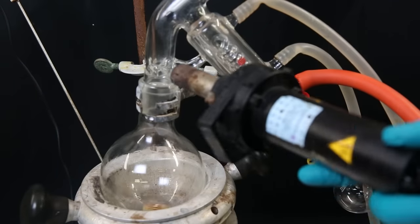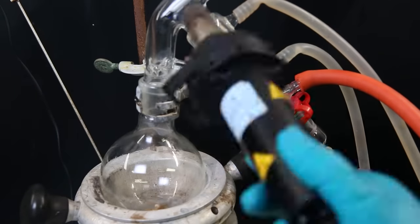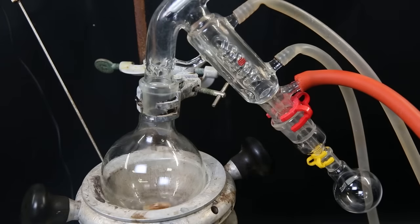When all of the ether has been pulled out, I swap the receiving flask. I now pull a strong vacuum on the setup, increase the heat, and distill over the tributyltin hydride with the help of a heat gun.